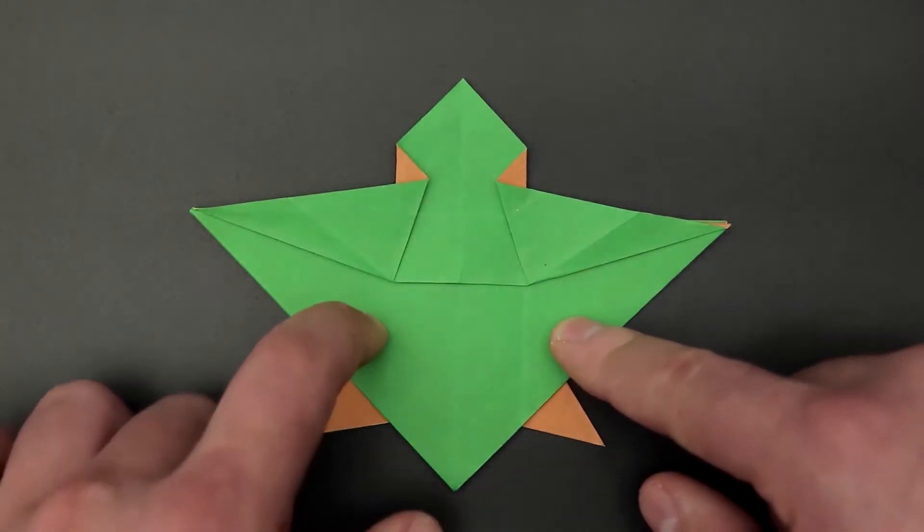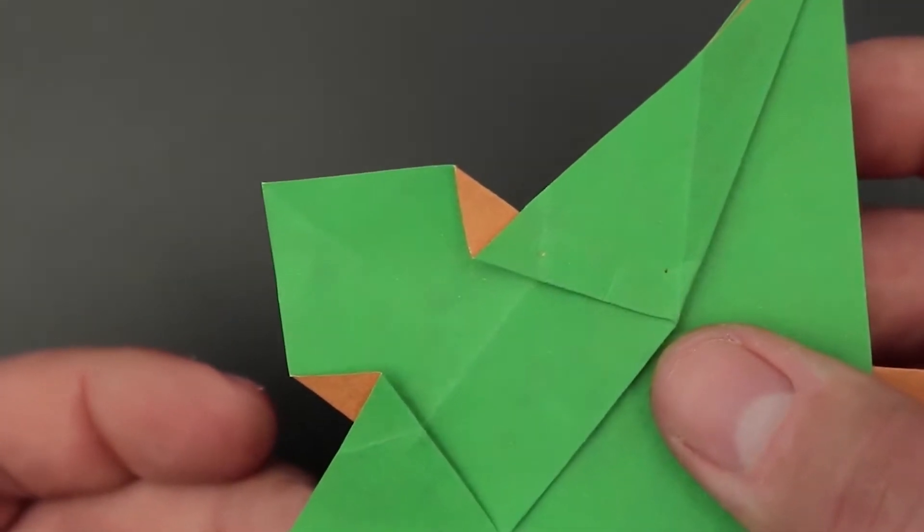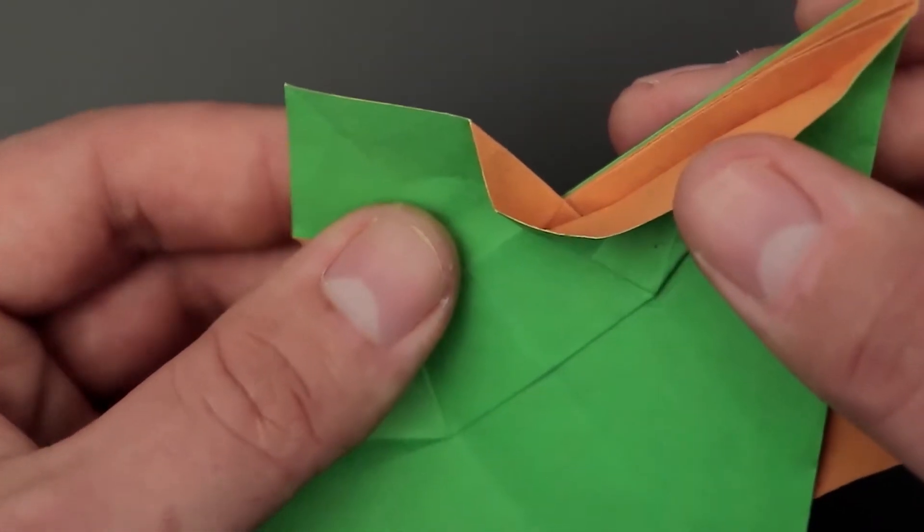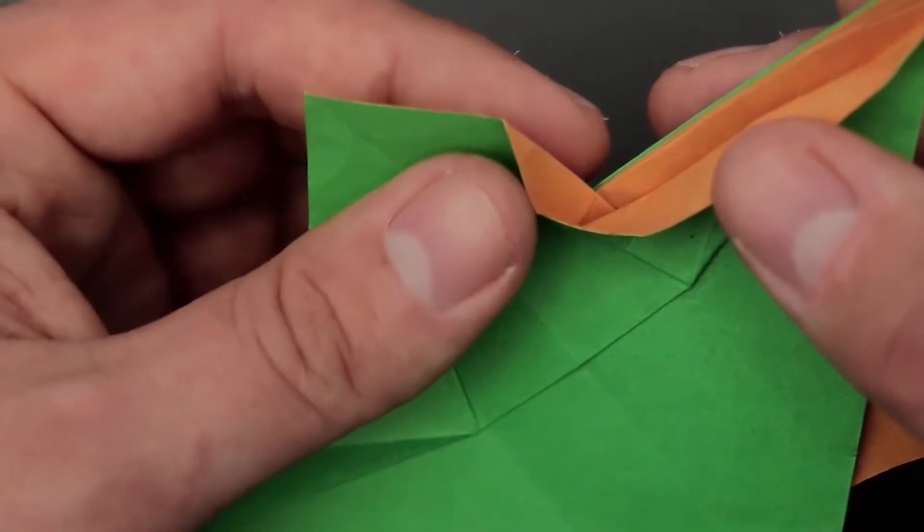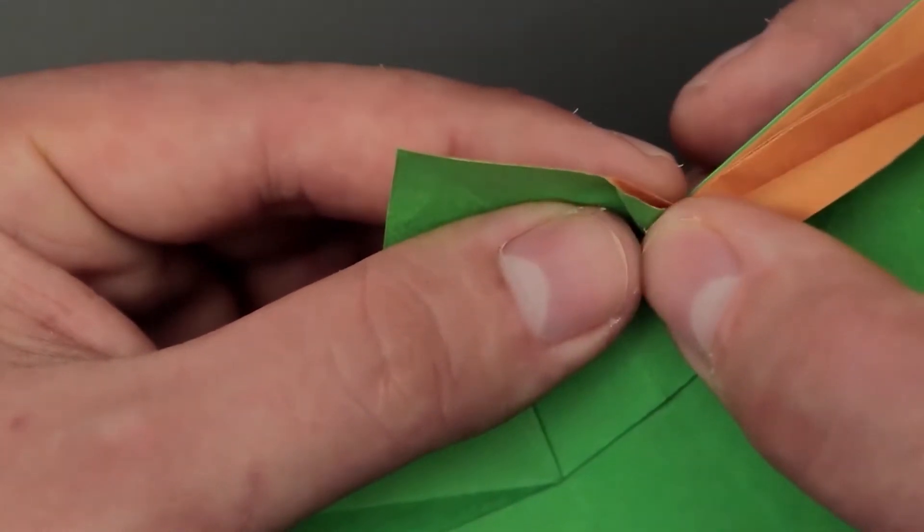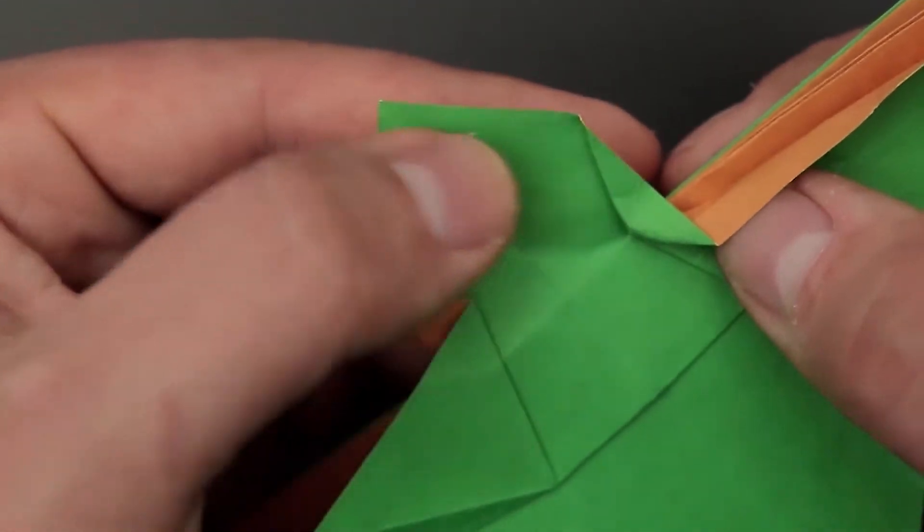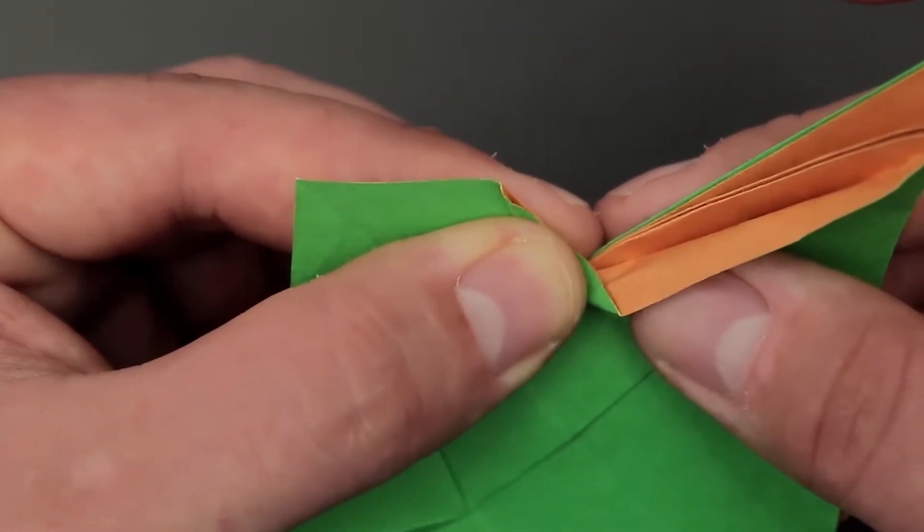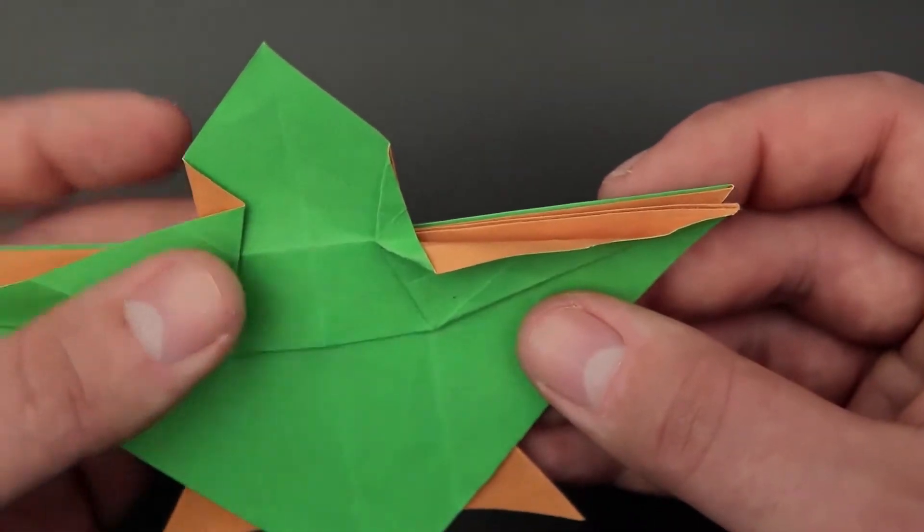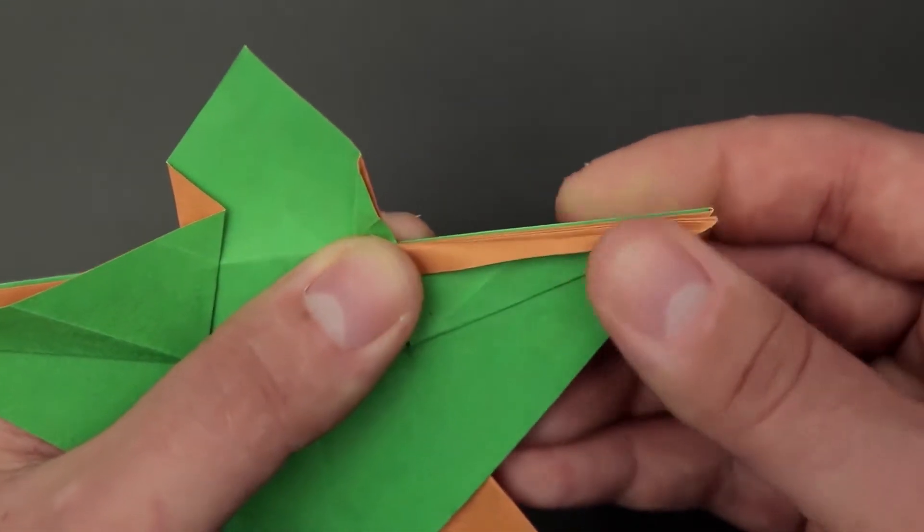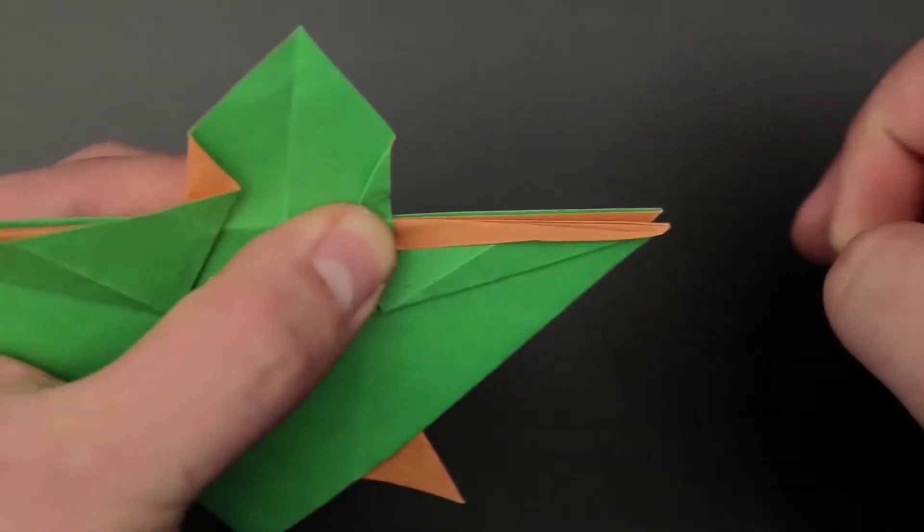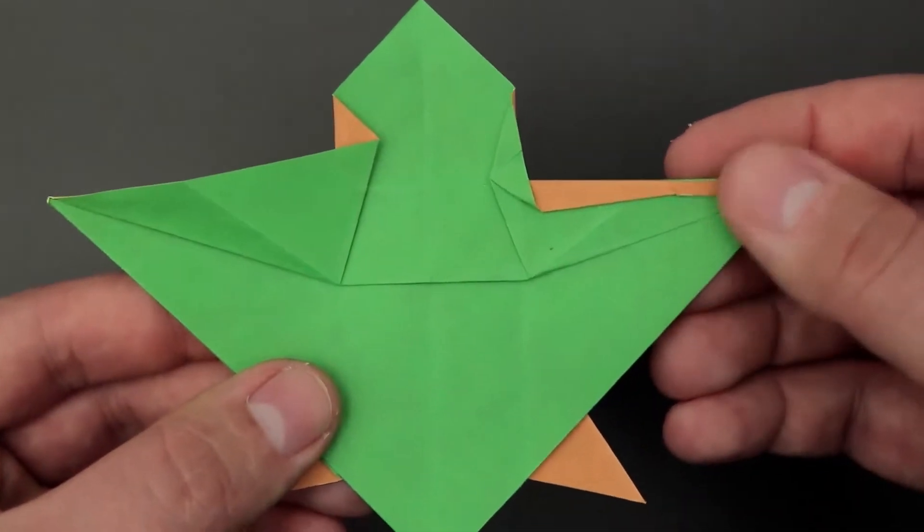With that we still have two small parts with different color. Again starting on the right, we're going to have to pull this layer back. Then we close this smaller part, bringing one edge to the other. And then we bring the remaining paper down.